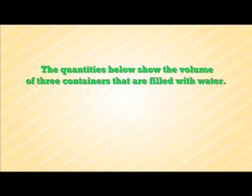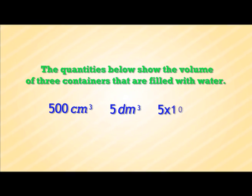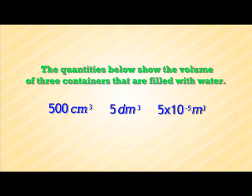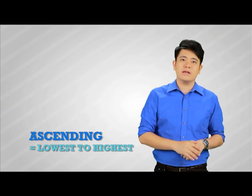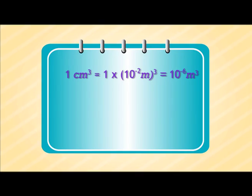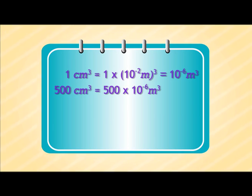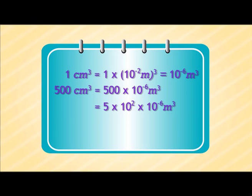For the final question: the quantities below show the volume of 3 containers that are filled with water — 500 cm³, 5 dm³, and 5 times 10 to the power of negative 5 meter cube. Arrange the quantities in ascending order. To solve this question, you must first convert all the values to SI unit and standard form. For 10 to the power of minus 2, when you cube it, it becomes 10 to the power of minus 6. Substitute cm³ with 10 to the power of negative 6 meter cube, and you will get 5 times 10 to the power of minus 4.